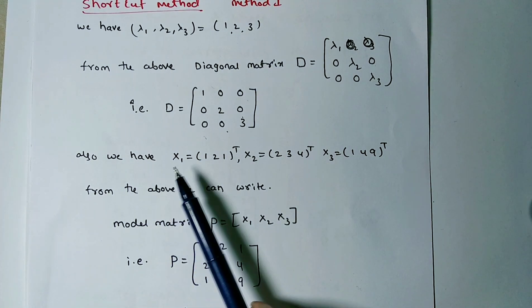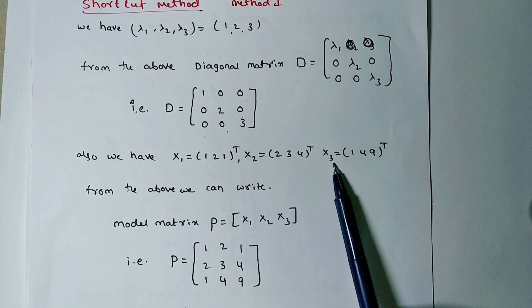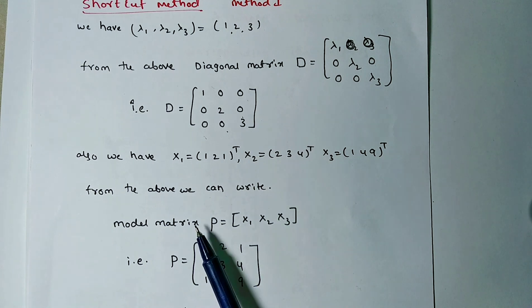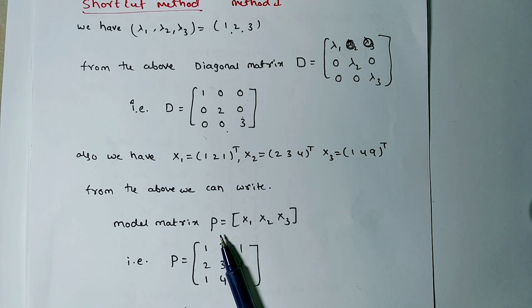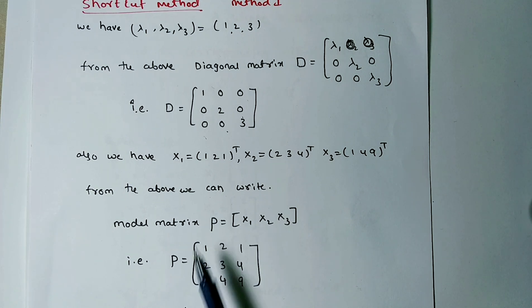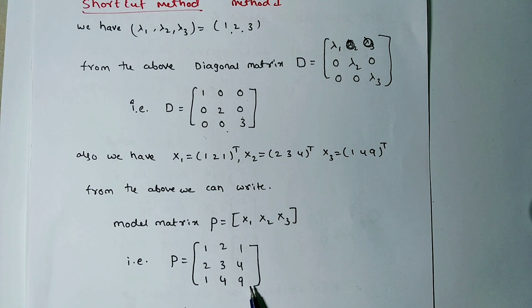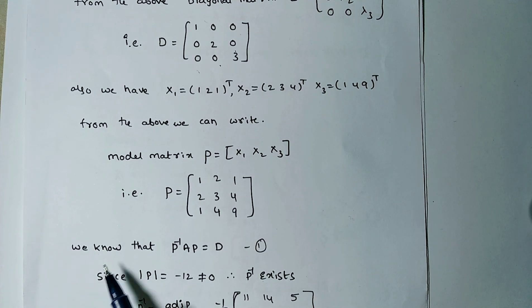From the above, the modal matrix P is formed by writing x1, x2, x3 as columns: P = [1, 2, 1; 2, 3, 4; 1, 4, 9]. We know the property that P⁻¹AP = D. P⁻¹ exists only if P is a non-singular matrix, so we must check the determinant of P.